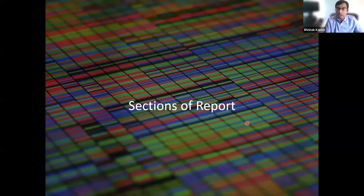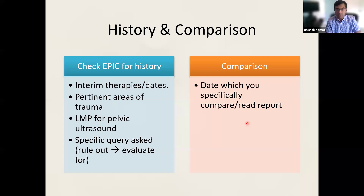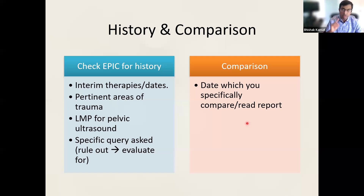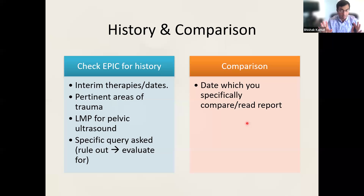Now let me go into the sections of the report. History — I call this the homework. I always encourage trainees to understand the pre-test probability before delving into a case. In both nuclear medicine and radiology, you need to check the EMR for history, know the interim therapies and dates, pertinent areas of trauma, external signs of injury, and LMP for pelvic ultrasound. For the specific query, use 'evaluate for' rather than 'rule out.'